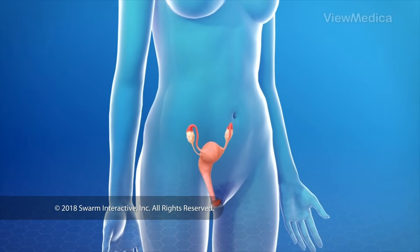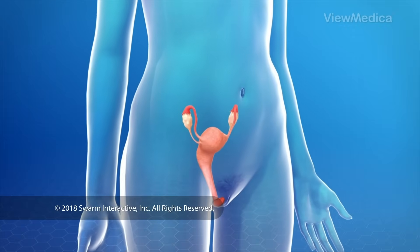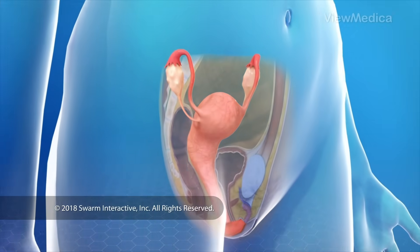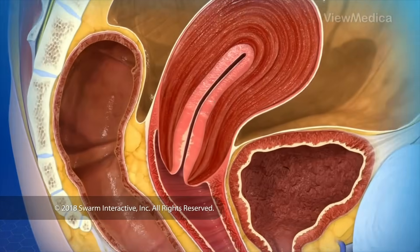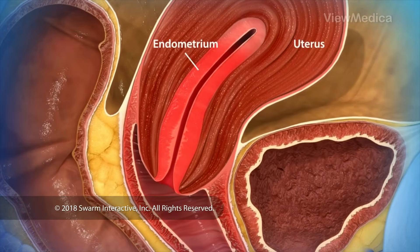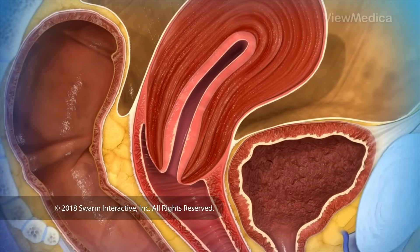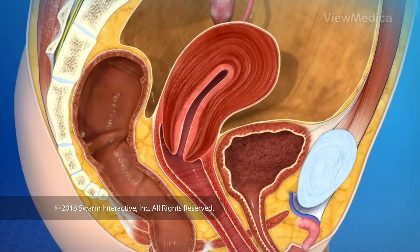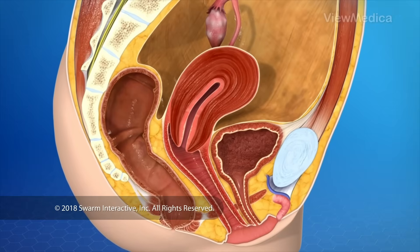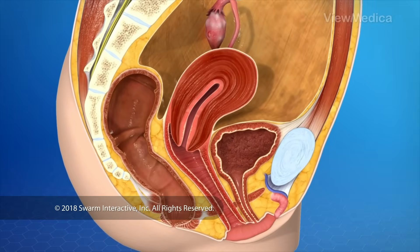This involves your endometrial tissue. It lines the inside of your uterus — that's the tissue that breaks down and sheds when you have your period. With this condition, your endometrial tissue begins to grow outside of your uterus. This tissue can grow on your ovaries, on your fallopian tubes, or in other places in your abdomen.